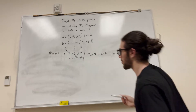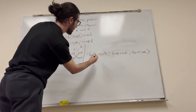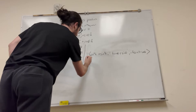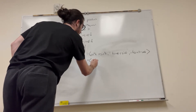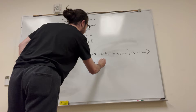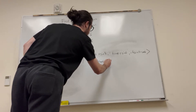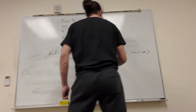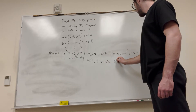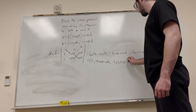We can simplify this a little bit. If you know some trig identities, you know that cosine squared of T plus sine squared of T is just equal to one. So the I component becomes one. The J component becomes negative T cosine T plus sine of T. And the K component becomes negative T sine T minus cosine of T.